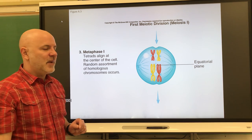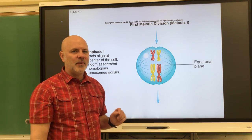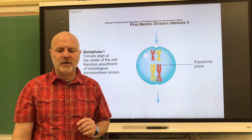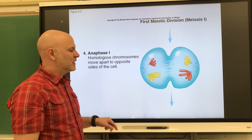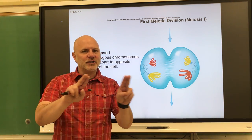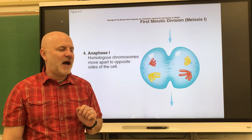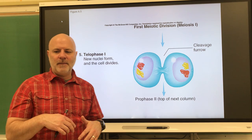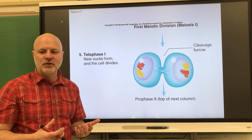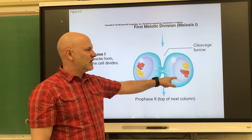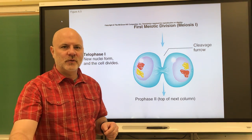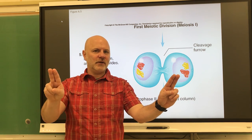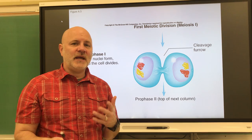Next is metaphase one, where homologous chromosomes are lined up in the middle of the cell — we're going to have 23 pairs of chromosomes lined up there. In anaphase one, homologous chromosomes are separated from each other and move to opposite poles of the cell. In telophase one, the cells are divided into two independent cells, and each cell contains 23 chromosomes. We start off with 23 pairs, separate homologous chromosomes — 23 go this way, 23 go that way — and 23 is the haploid number.